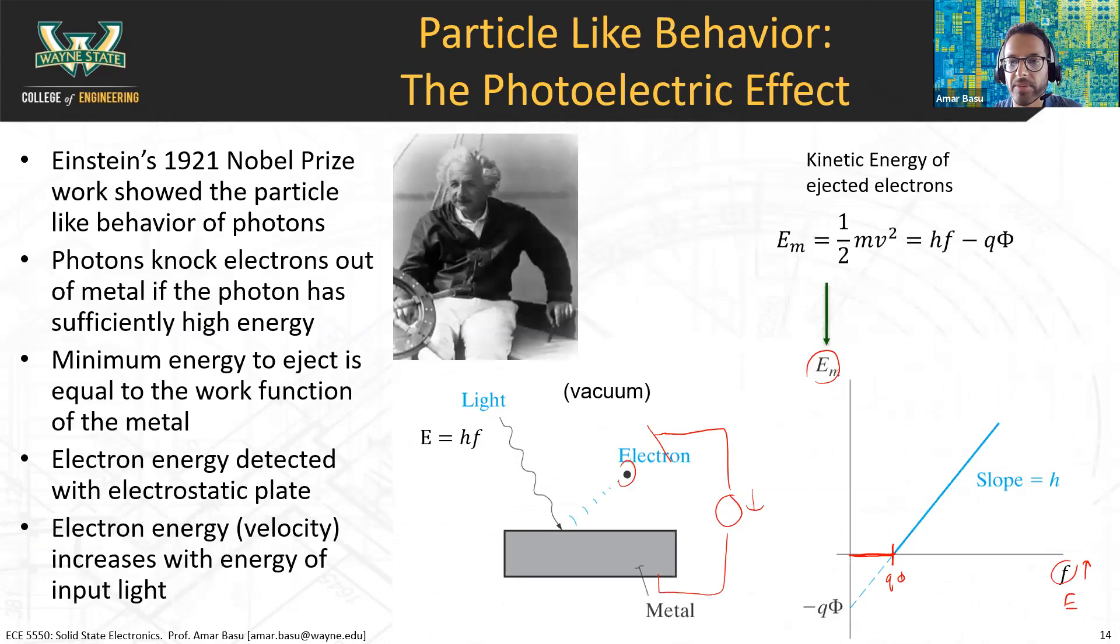We did some examples of that. We talked about the photoelectric effect, which is where light - when you think about light as a particle, we think about it as a photon and that photon has a particle-like behavior. If you imagine the photon hitting metal, it has to have enough energy in order to knock out an electron. So this experiment showed that the amount of energy required to knock off an electron is equal to the work function of the metal, and we're going to talk a lot about work functions when we get to metal-semiconductor junctions.